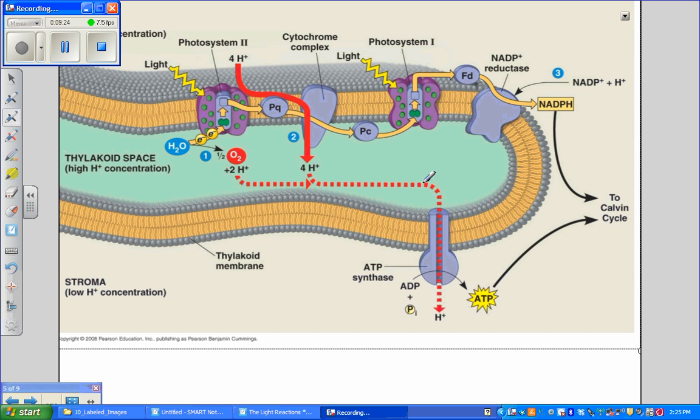The passive flow of protons through ATP synthase drives the phosphorylation of ADP forming ATP. In our next video, we're going to talk specifically about how light is absorbed by photosystem 2 and what happens to that electron before it enters photosystem 1.